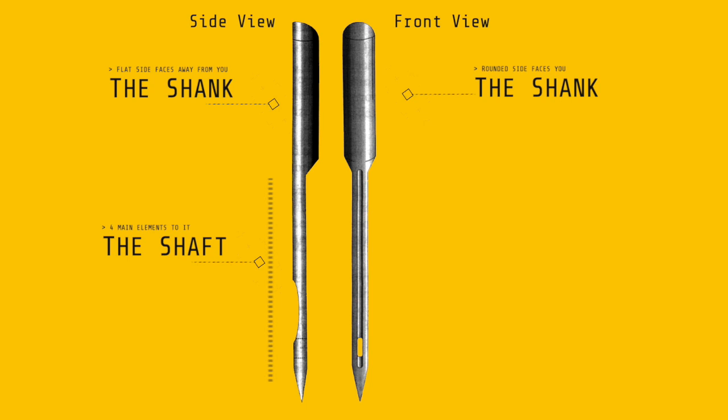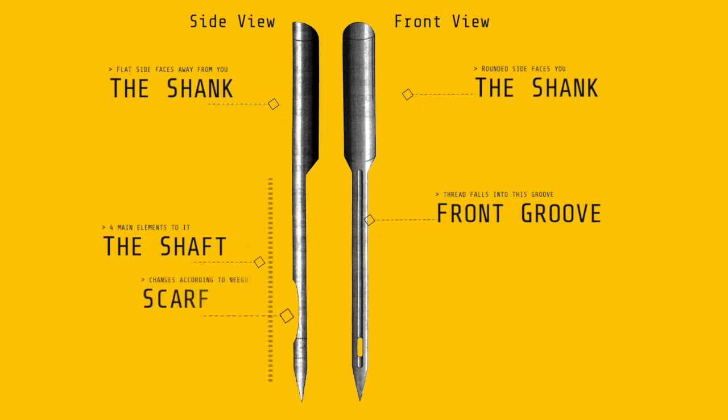At the front facing you, there is a little groove where the thread will sit. Behind, facing away from you, is where we have the scarf, and this is changed according to the type and purpose of the needle.